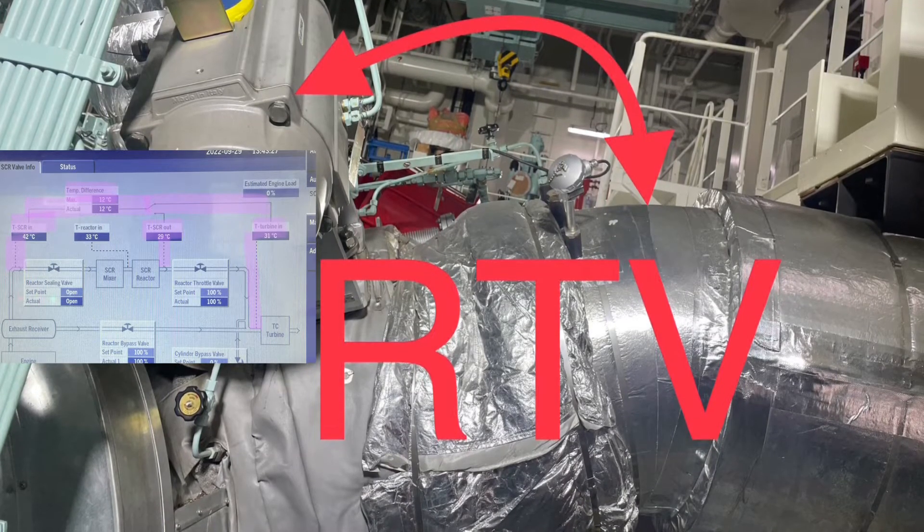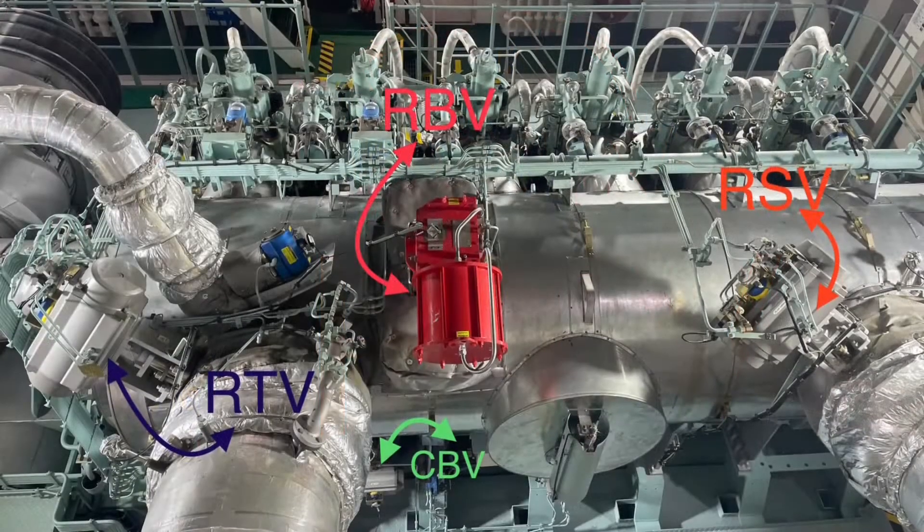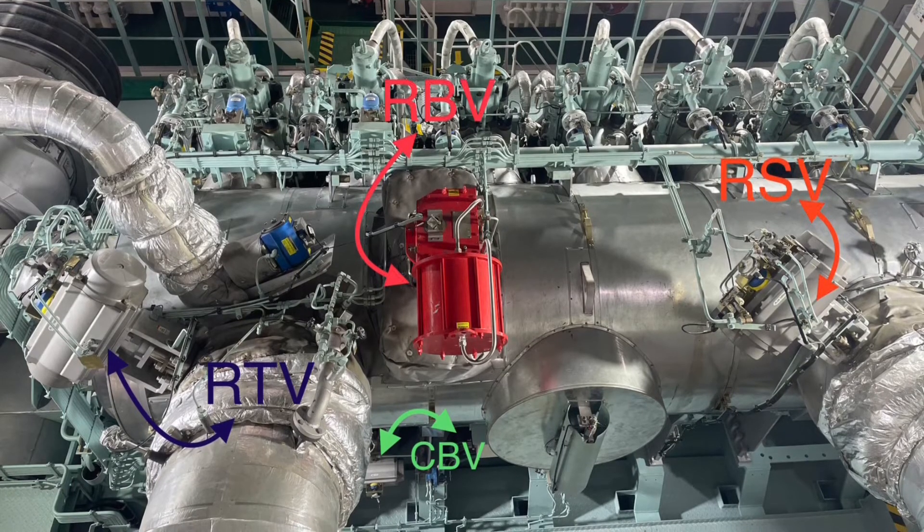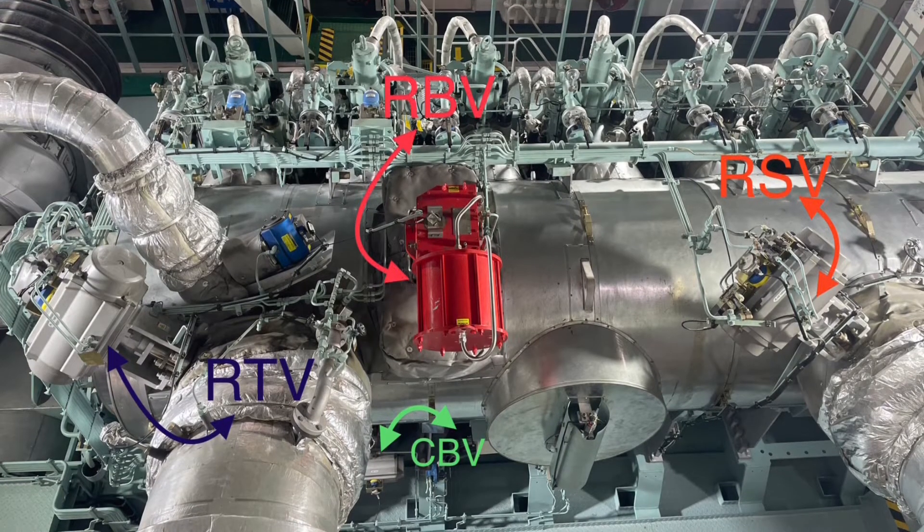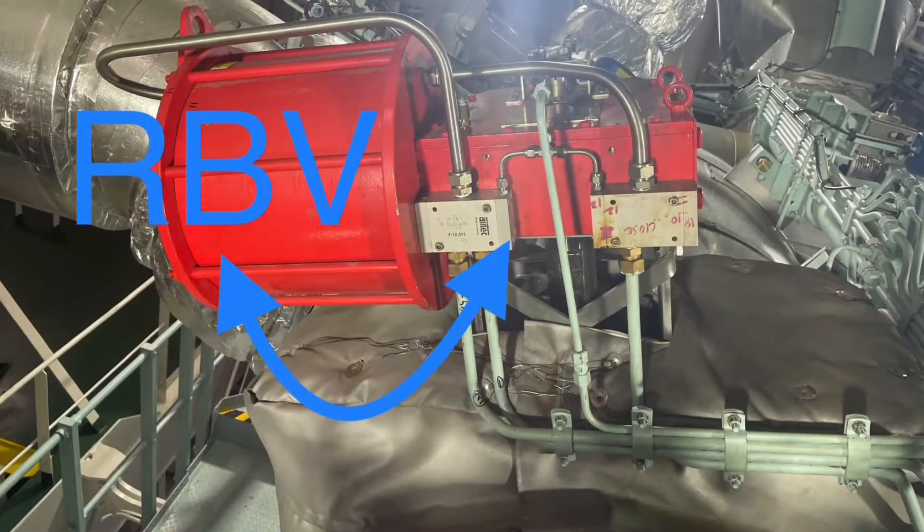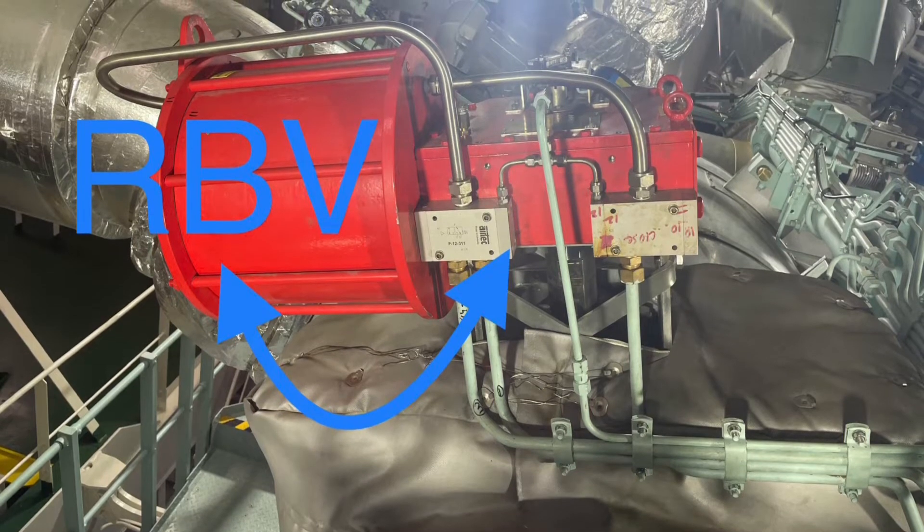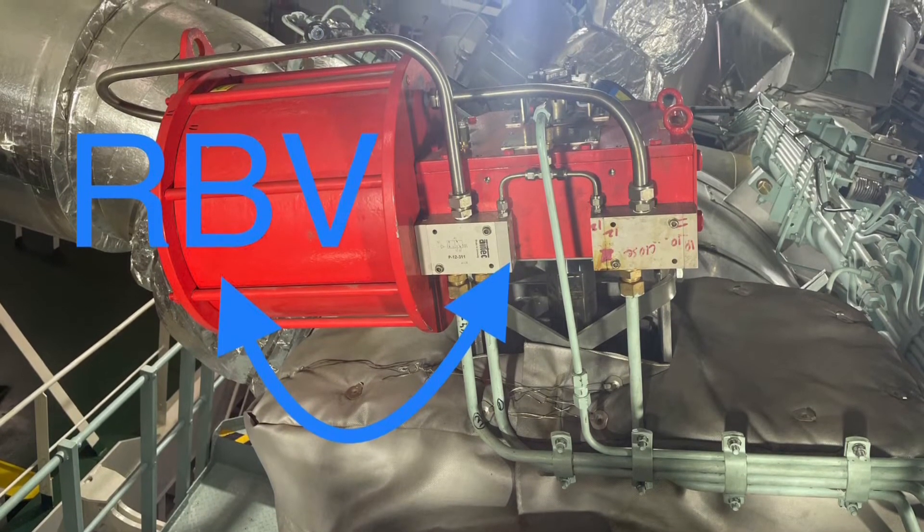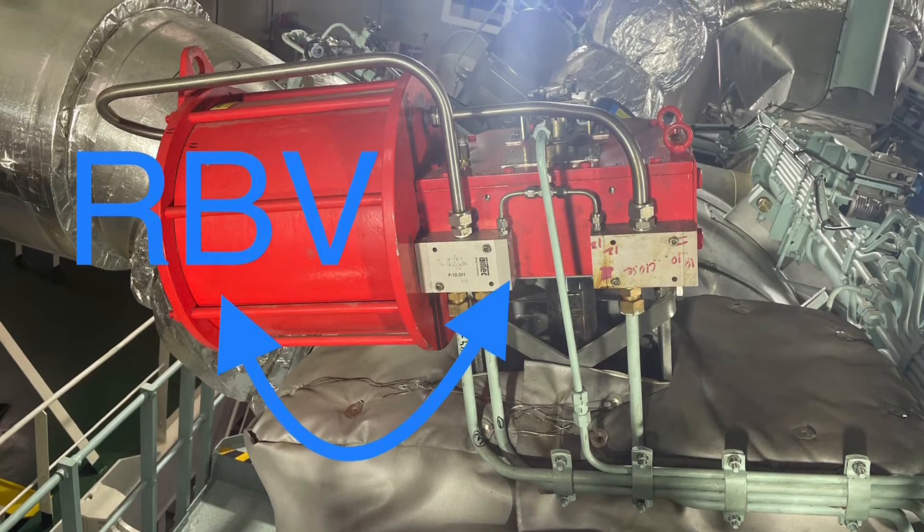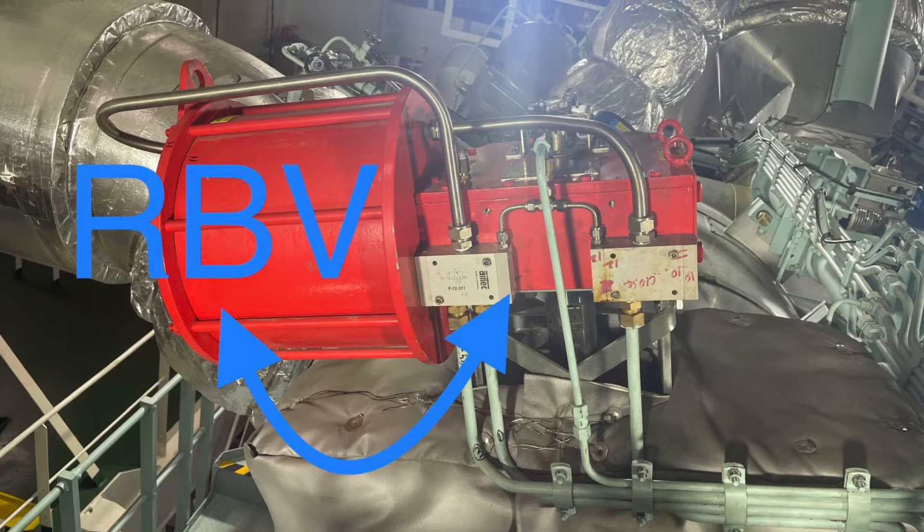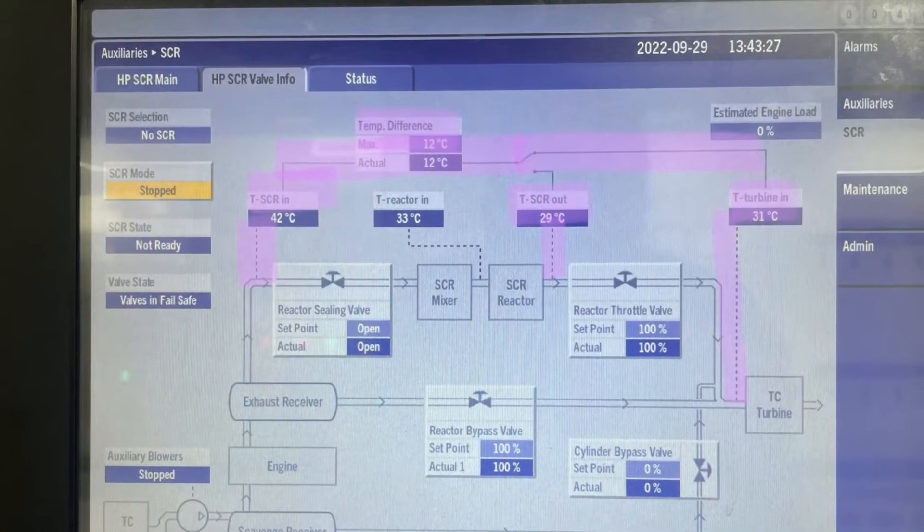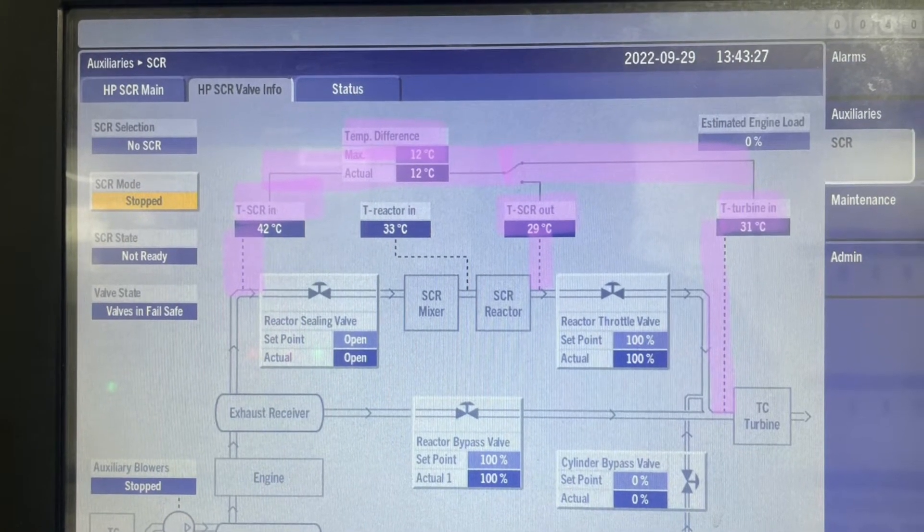The next valve is RBV, the reactor bypass valve, which is used to bypass the SCR reactor in Tier 2 operation. This RBV also regulates the exhaust gas flow same as RTV to ensure the predefined maximum temperature difference over SCR line. This also ensures that exhaust gas flow to the turbocharger has enough energy for the engine to work properly.